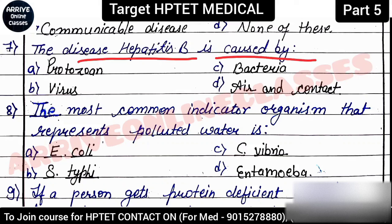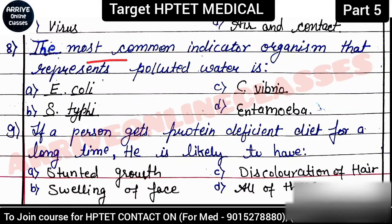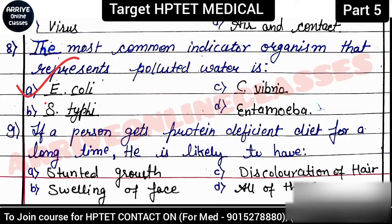Next question: 'The disease Hepatitis B is caused by?' The correct answer is virus — it is a viral disease. Hepatitis B is also a sexually transmitted disease (STD). The full form STD means sexually transmitted disease. Next question: 'The most common indicator organism that represents polluted water?' The right answer is E. coli (Escherichia coli).